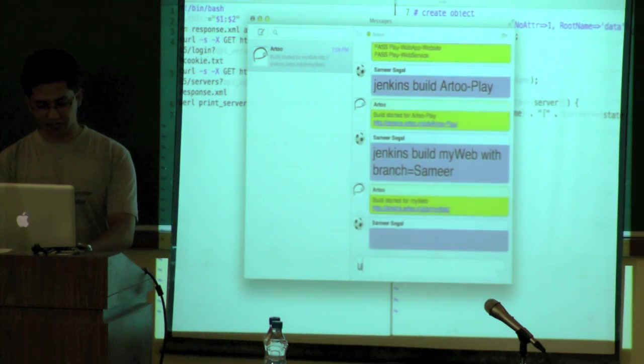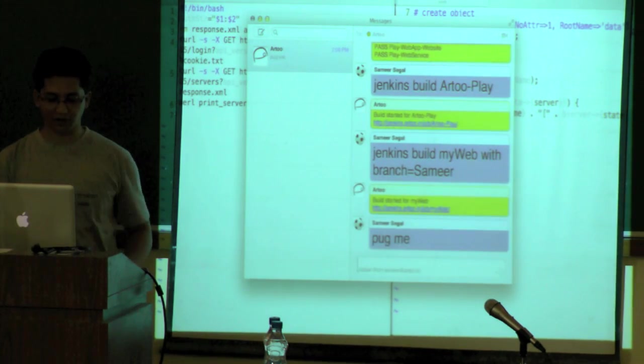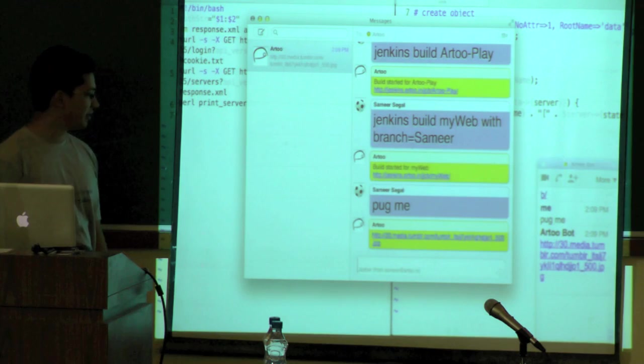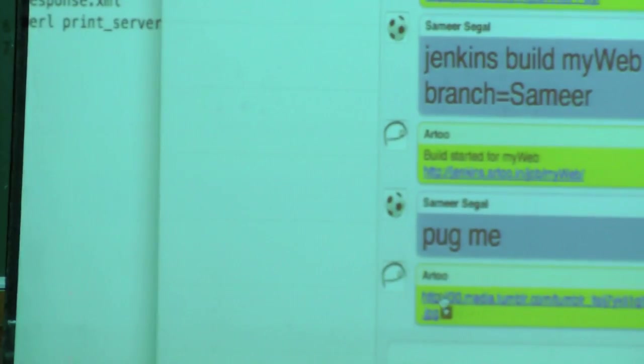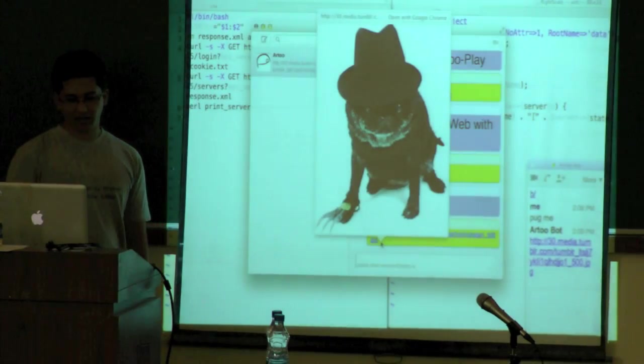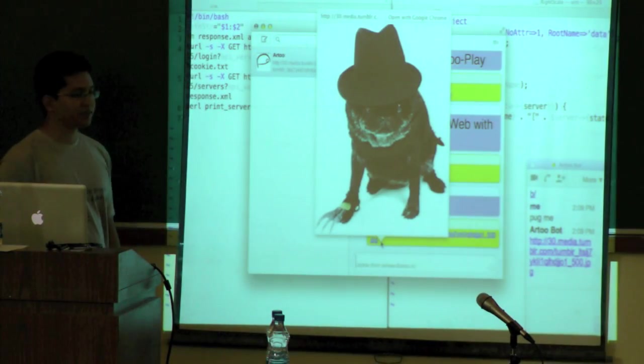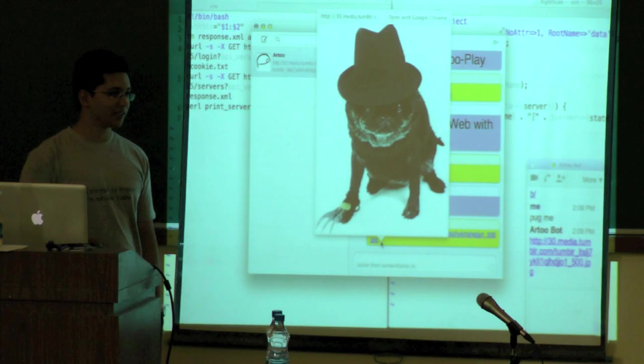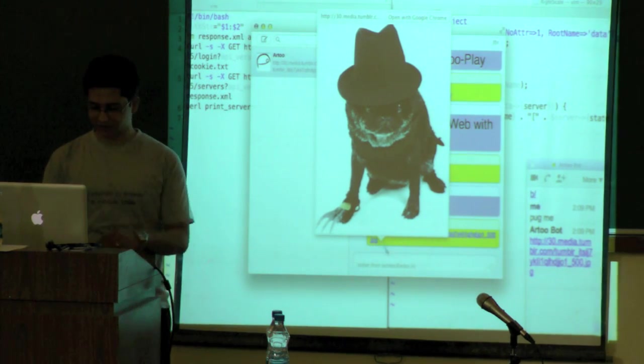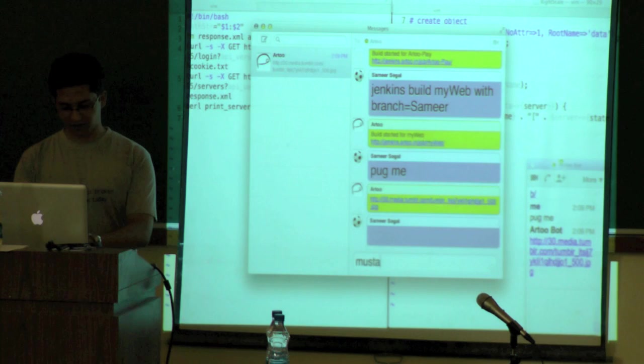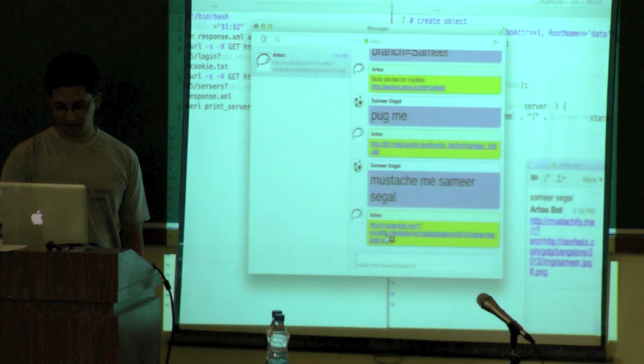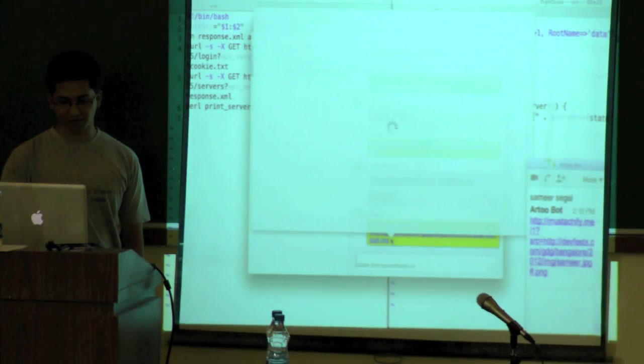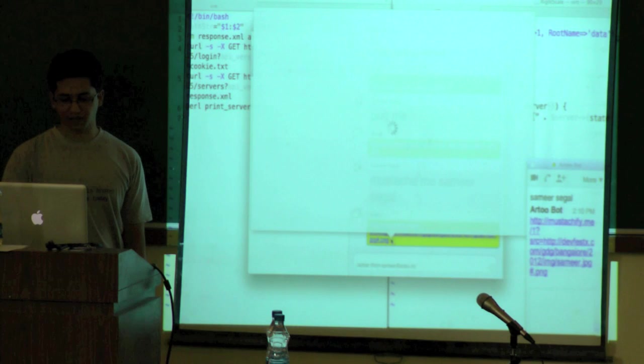There are fun things like you can type, when you are a little bored, you can type Pug me. And what it does is it gives you a little picture of a Pug, a random picture of a Pug. There are various funny scripts like this. And you can also type Mustache me and your name. And hopefully you should see an image of me looking like Mangal Pandya.